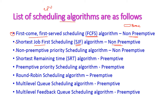Next is non-preemptive priority scheduling algorithm. After that is Shortest Remaining Time algorithm, which is a preemptive algorithm. Preemptive algorithm means there is a possibility that the process may come out from the CPU while executing, because of an IO request or interrupt.